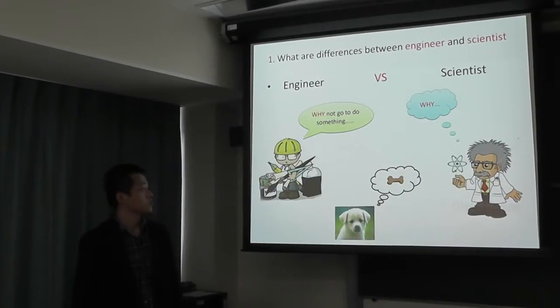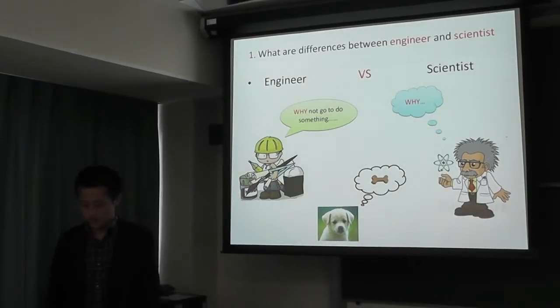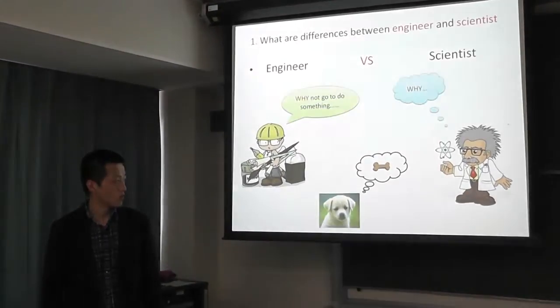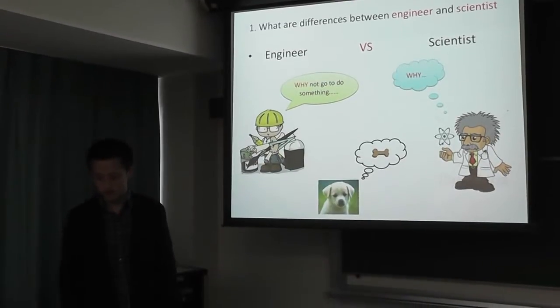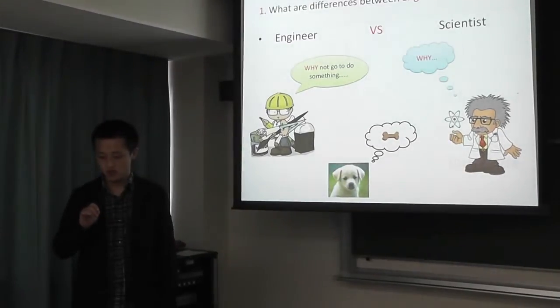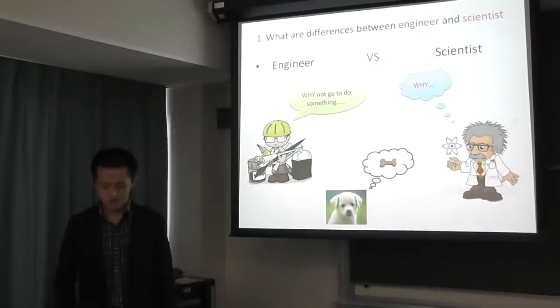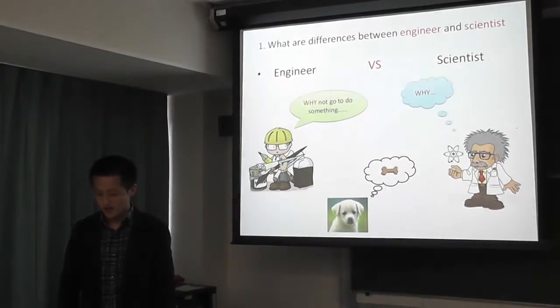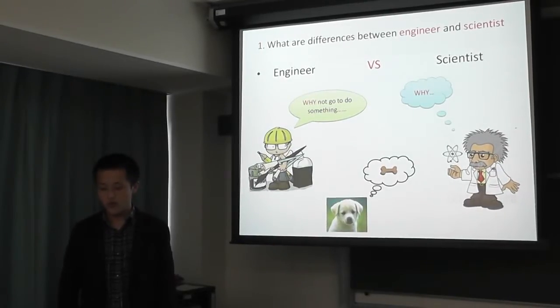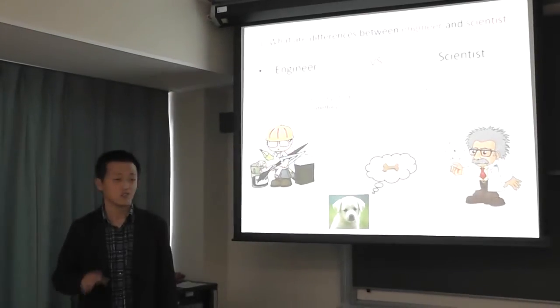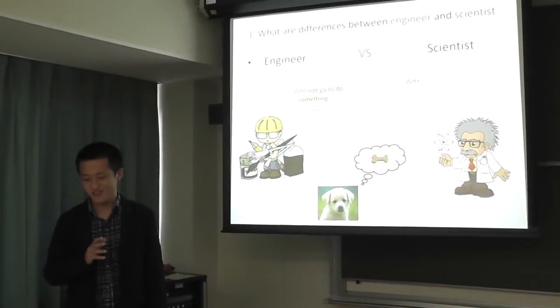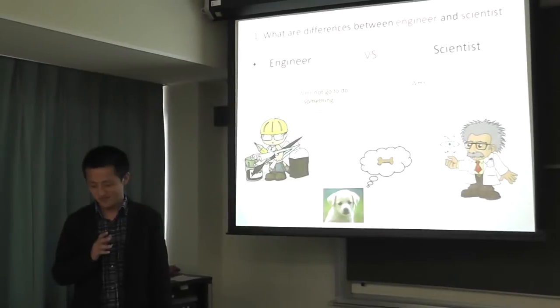First I want to talk about the difference between scientist and engineer. A scientist like Einstein or Newton, for example, Newton found the law about the gravitation, about the earth's gravity. I have to say, before I knew that Newton found the law about gravity, I had never thought about the question of why the apple will fall down on the earth. So I think I will never be a scientist forever.